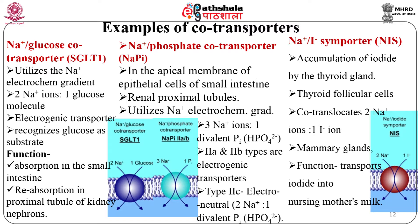The Na+/phosphate co-transporter, known as NaPi, is found in the apical membrane of epithelial cells of the small intestine and renal proximal tubules. It utilizes the Na+ electrochemical gradient to drive uphill transport of inorganic phosphate into the cell. For every transport cycle, NaPi type 1 and type 2 couple the translocation of 3 Na+ ions to 1 divalent Pi. Thus NaPi types 2A and 2B are electrogenic transporters. The third type, NaPi 2C, is electroneutral with a coupling stoichiometry of 2 Na+ to 1 divalent Pi.